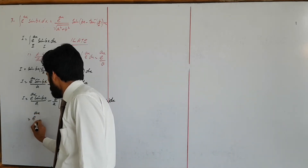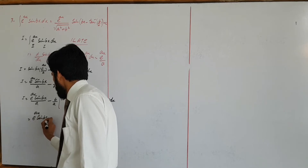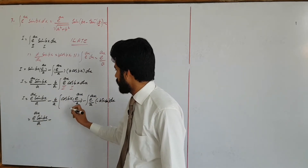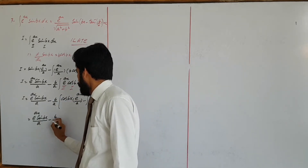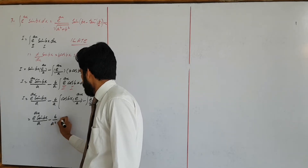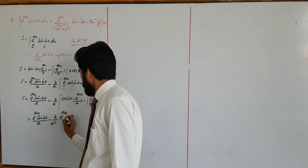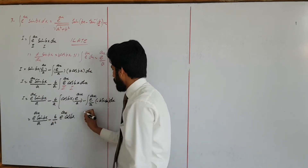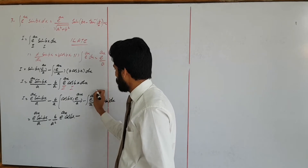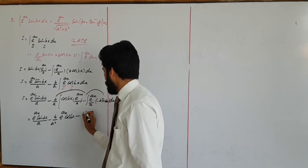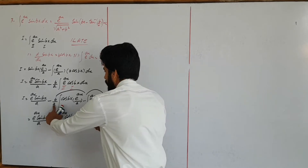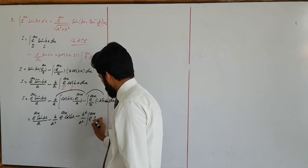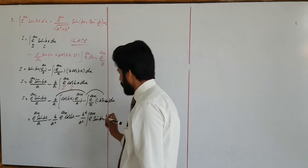Simplify करेंगे: e to the power ax sin vx upon a, minus b upon a squared into e to the power ax cos vx, minus b squared upon a squared into integral of e to the power ax sin vx dx।